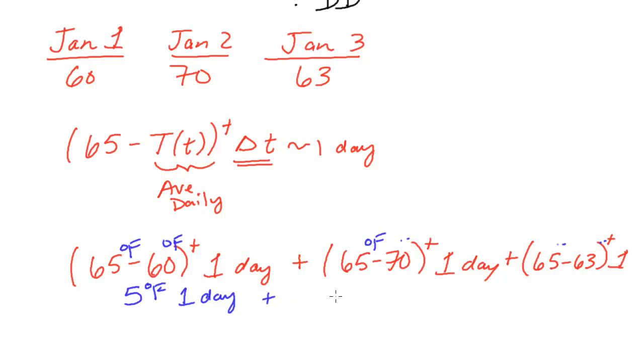Plus, we have a negative 5 in the parenthesis. And this nomenclature, again, remember, if it's negative, this is going to zero. So we actually have zero degrees F times one day. And this is very similar to the first one. We have a positive 2, 65 minus 63. That's positive. So we have 2 degrees F times one day.